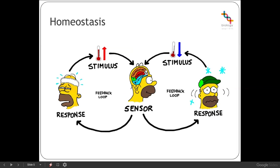Despite the changes in the external environment, organisms are trying to maintain a constant internal environment, and therefore they must adapt to maintain that or they become restricted within a very small habitat. The process of homeostasis involves a variety of different behavioural and physiological mechanisms. For example, if an individual is becoming too hot, that's the stimulus, which creates a response in a feedback loop — that response could be physiological, such as sweating, or behavioural, such as moving to a cooler area.